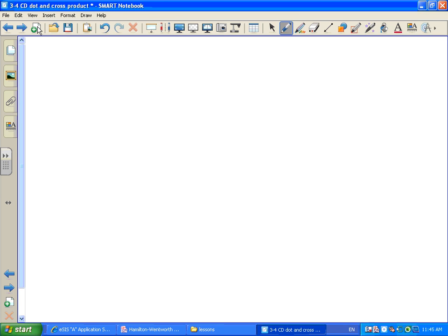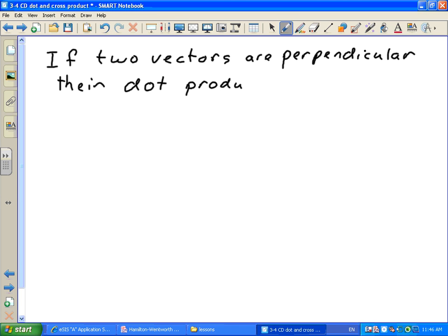A couple of other notes about the dot product. If two vectors are, what happened when they're perpendicular, their dot product is? Well, let's think about this. If two vectors are perpendicular, what's the angle between them? So when we work out the dot product, it's going to involve the cosine of theta, which is going to be the cosine of 90 degrees. What's the cosine of 90 degrees? Exactly. Zero. So the dot product of any two perpendicular vectors is always zero.